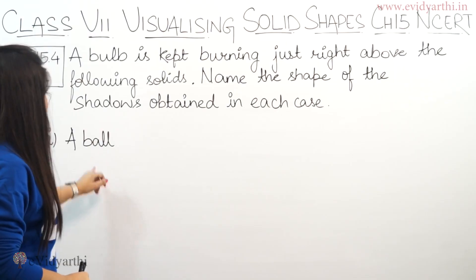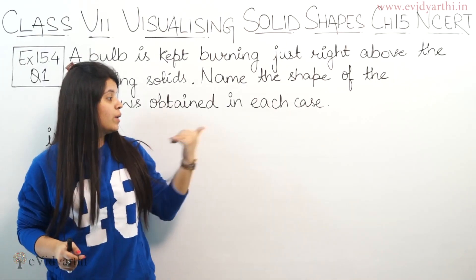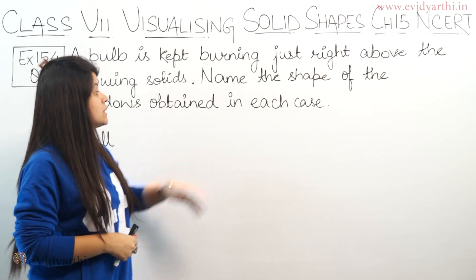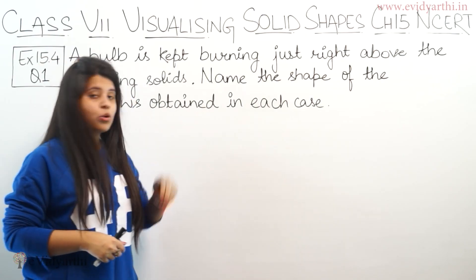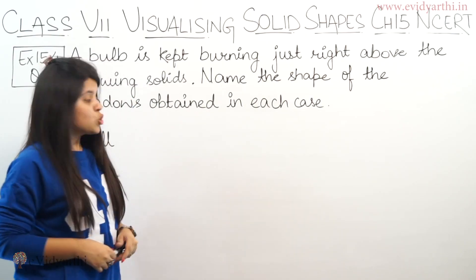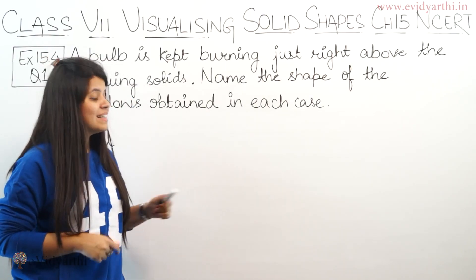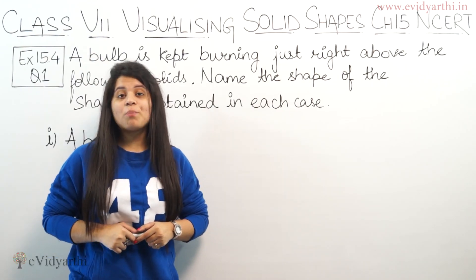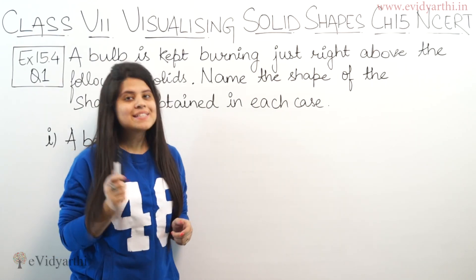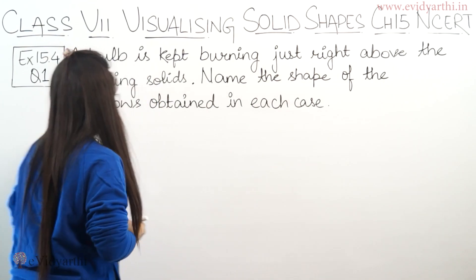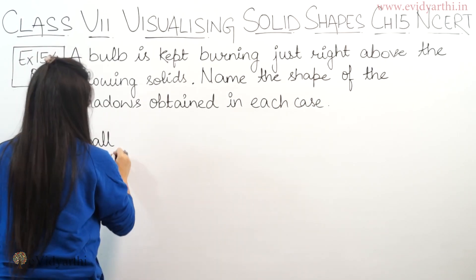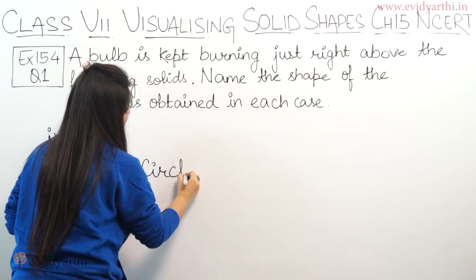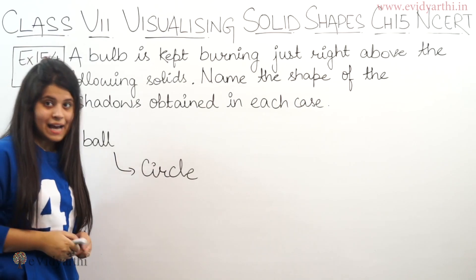The first part is given a ball. Here is a ball, and now if I put a bulb over this, you will see it will form a shadow. This shadow is in the shape of a circle. So the shape obtained in the first case is a circle.